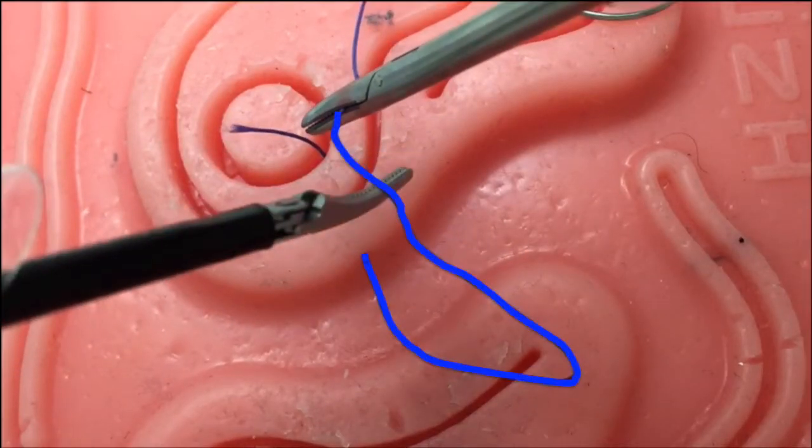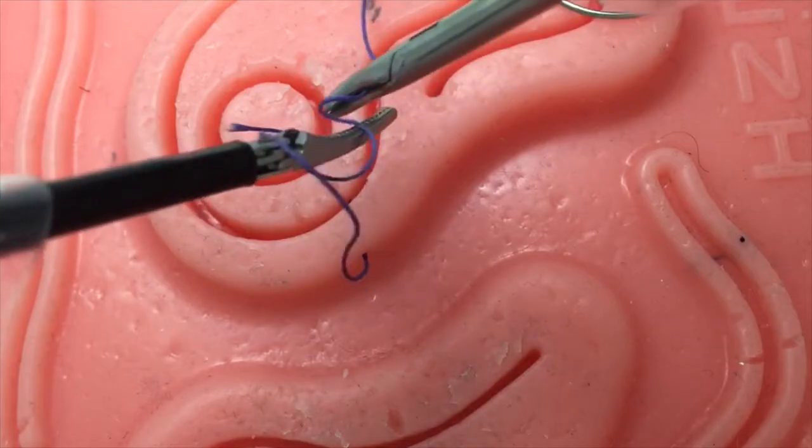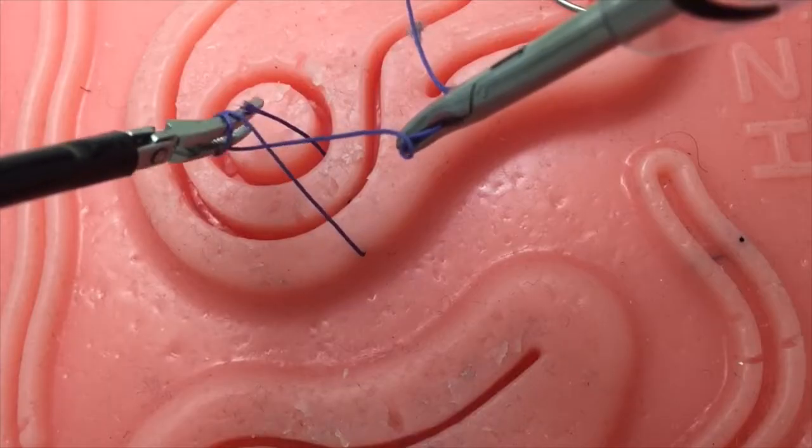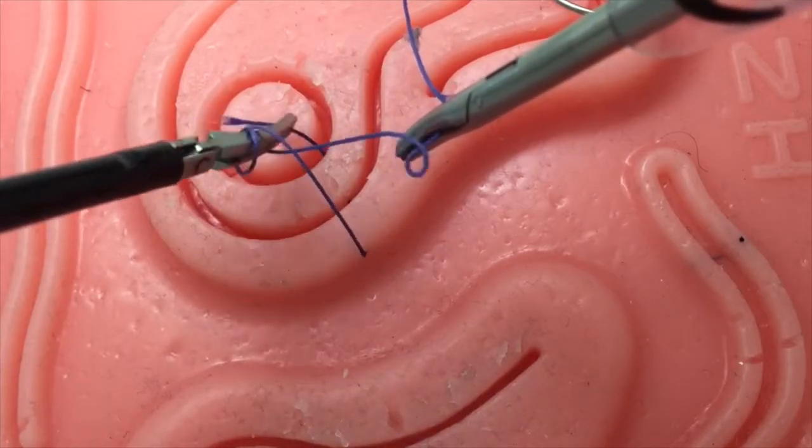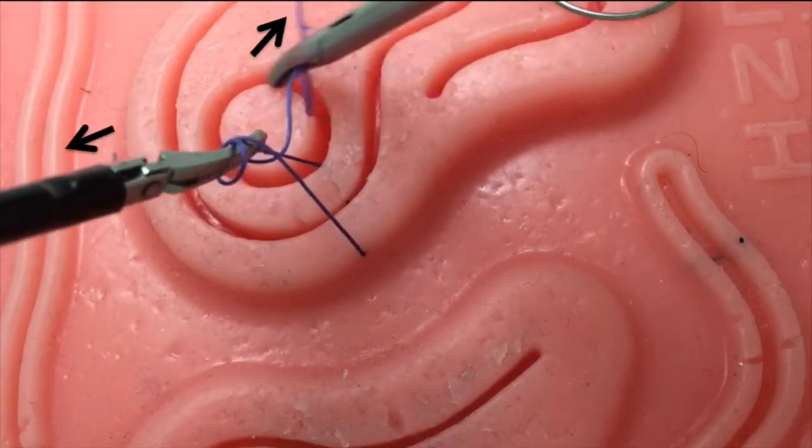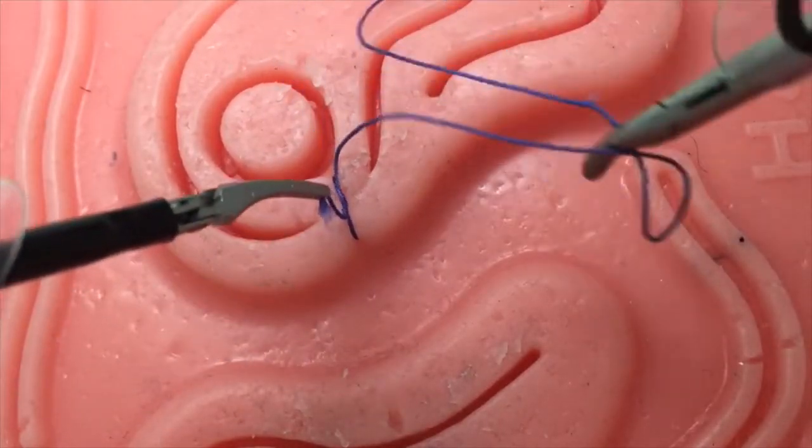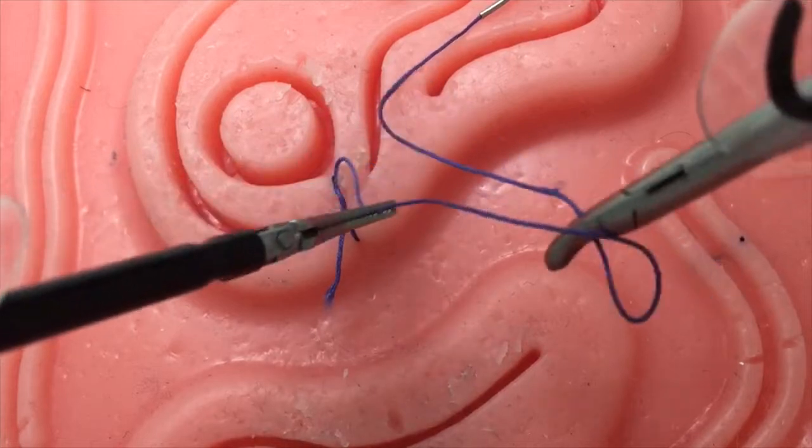Once the acute angle is created, place your left instrument inside the U and simply twist the suture twice around your instrument to create a surgeon's knot. Then, grasp the loose end with your left instrument while pulling upward while your right instrument pulls downward. Once the knot has been secured, create a second elongated U.